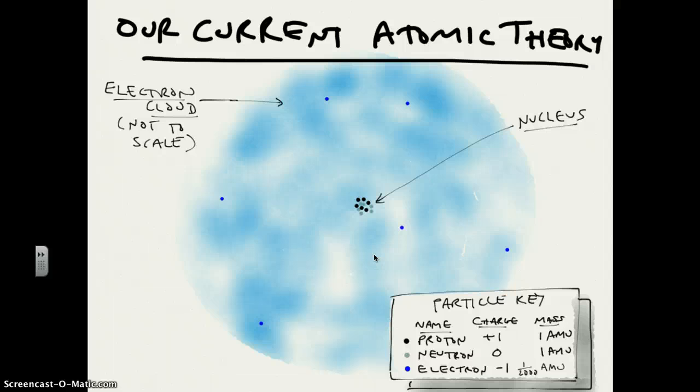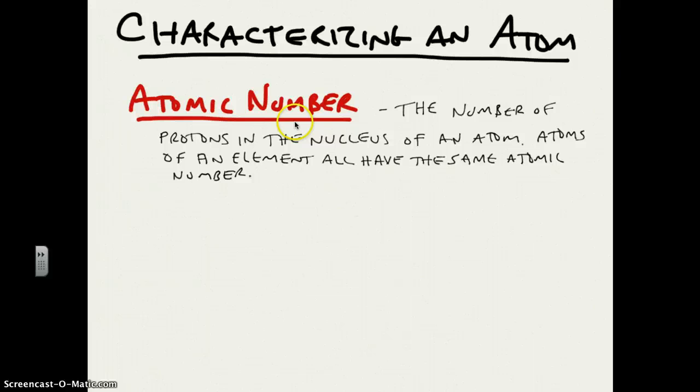The things we can keep track of about an atom, first of all, is something known as the atomic number, which is the number of protons in the nucleus of an atom. It turns out that atoms of an element, of the same element, all have the same atomic number.